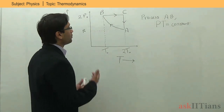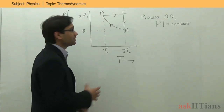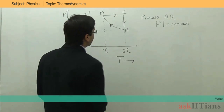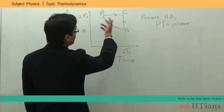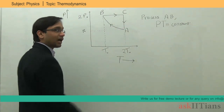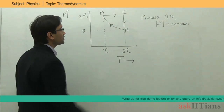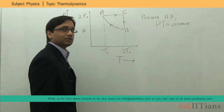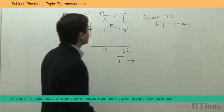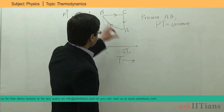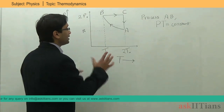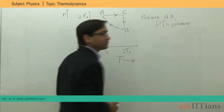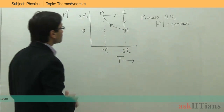We have n moles — suppose this is a monoatomic gas. For this thermodynamic process, the BC process can already be seen from the diagram: it is an isobaric process. The C-to-A process is occurring at constant temperature, so this will be an isothermal process. For process AB, the condition given is PT = constant.